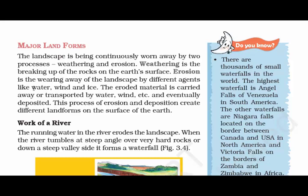Water takes away a lot of the soil and deposits it from one place to another. Wind blows away all the sand from one place to another. Ice takes away the entire soil with it — once it starts melting, it turns into water and takes away the entire soil of that place. The eroded material is carried away or transported by water, wind, etc., and eventually deposited. Now we understand the meaning of erosion and deposition.